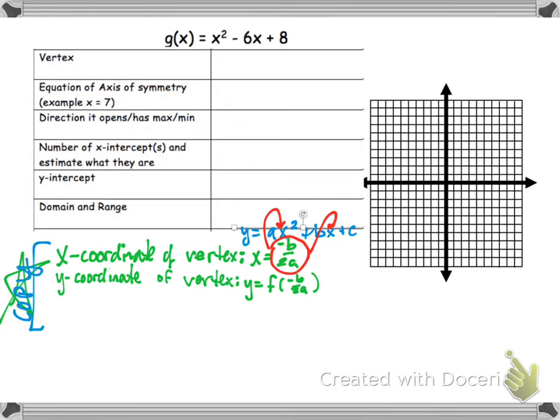All right, so let's see how that looks. You should write that down if you haven't already. Pause if you need to. All right, so these are our a's, b's, and c's. a is 1, b is negative 6, c is 8.